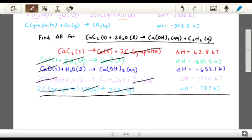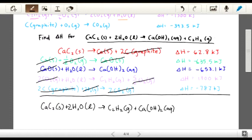And so we'll end up getting CaC2(s) plus 2H2O in liquid form is C2H2 as a gas plus Ca(OH)2 aqueous, which when you compare that to the equation that we're trying to find the enthalpy for, they're exactly the same.